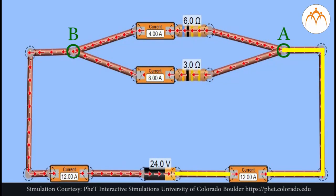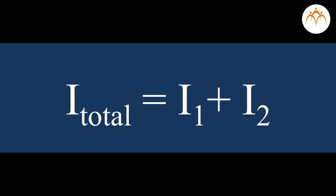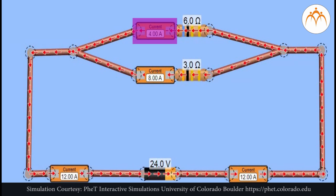Charge flows into point A at the rate of 6 amps and divides into two pathways — one through resistor 1 and the other through resistor 2. The current in the branch with resistor 1 is 4 amps and the current in the branch with resistor 2 is 8 amps. After these two branches meet again at point B to form a single line, the current again becomes 12 amps. Thus, I total equals I1 plus I2: 12 amps equals 4 amps plus 8 amps.